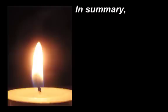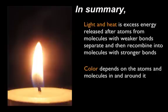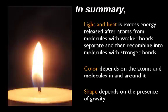So, in summary, when observing a flame, the light we see and the heat we feel is the excess energy released after atoms from molecules with weaker bonds separate and then recombine into molecules with stronger bonds. The color of a flame depends on the atoms and molecules in and around it, and the shape of a flame depends on the presence of gravity. Thanks for listening, guys, and I hope everyone appreciates the fascination of science as much as I do.